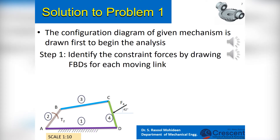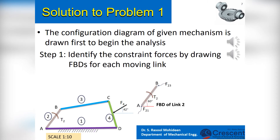Step 1 is to identify the forces acting on the links of the mechanism. For that, we need to draw the free body diagrams of each moving link. The fixed link can be ignored. We start with link 2, that is link AB, drawn at the same inclination and length as in the mechanism diagram. At point A we have a constraint force F21, and at point B another constraint force F23. We also need to show the torque to be developed at link AB to keep the mechanism in equilibrium. So link AB is a 2-force and torque member.